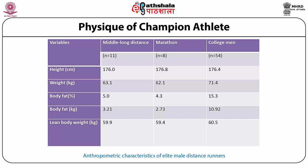When this type of body is blended with a lean body composition, a highly developed aerobic system, proper psychological attitude for long intensive training, and the proper diet, the conditions certainly exist for a winner. As we can see from Table 2, it shows the anthropometric characteristics of the elite male distance runner.